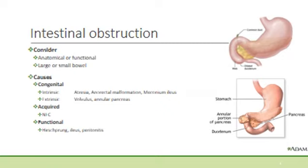Under the causes, it might most commonly be a congenital abnormality, which can be intrinsic as found with atresia, anorectal malformations or meconium ileus. Or it can be extrinsic problems such as volvulus or annular pancreas that causes obstruction. It may also be acquired, and in this case the most commonly associated condition is necrotising enterocolitis.